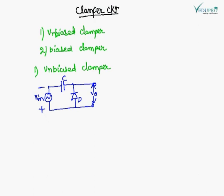For this polarity, the diode is forward biased. The current in the circuit flows in a direction that charges the capacitor with a specific polarity — positive on one side and negative on the other. The capacitor will charge to the peak of the input voltage, which is Vm.